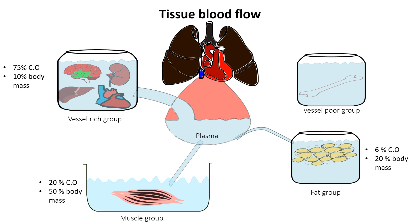In clinical practice, cardiac output significantly affects anesthetic uptake. A higher cardiac output increases blood flow to peripheral tissues, slowing the rise in alveolar concentration and delaying induction. Conversely, a lower cardiac output directs more anesthetic to the vessel-rich group, leading to faster induction.